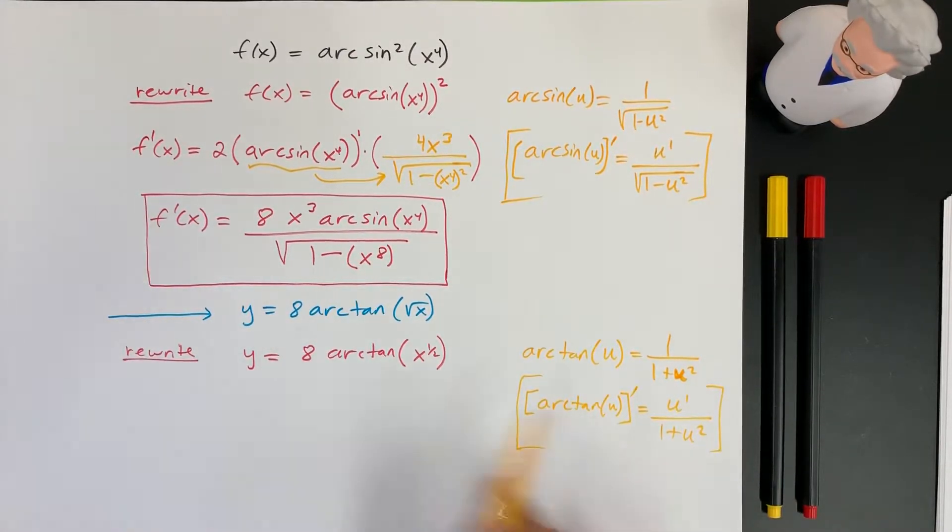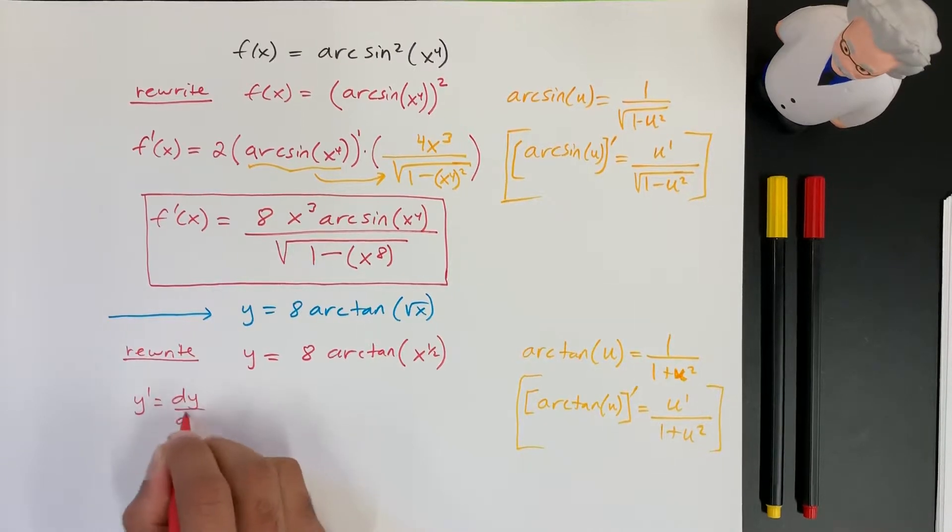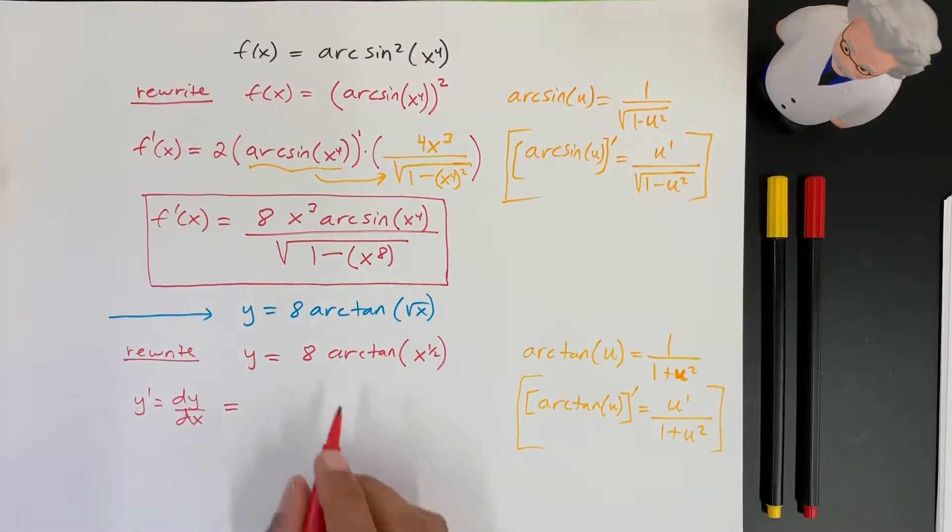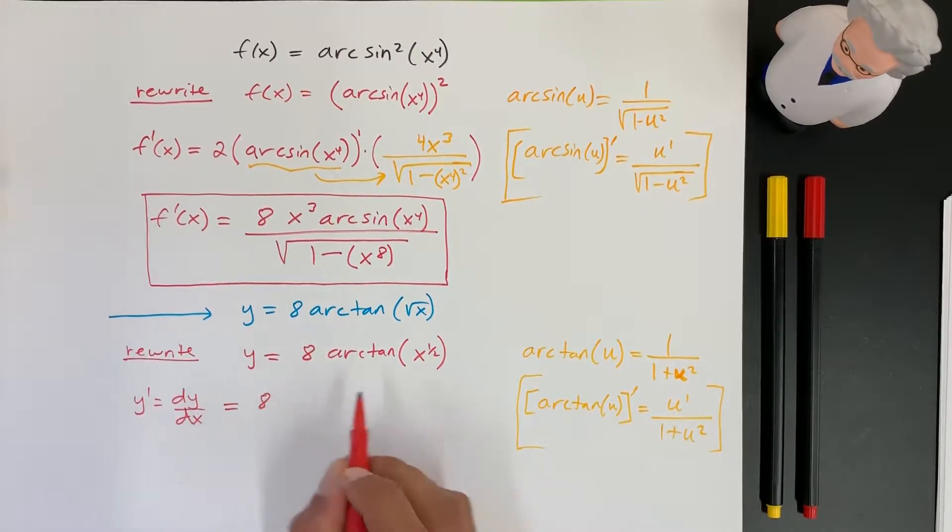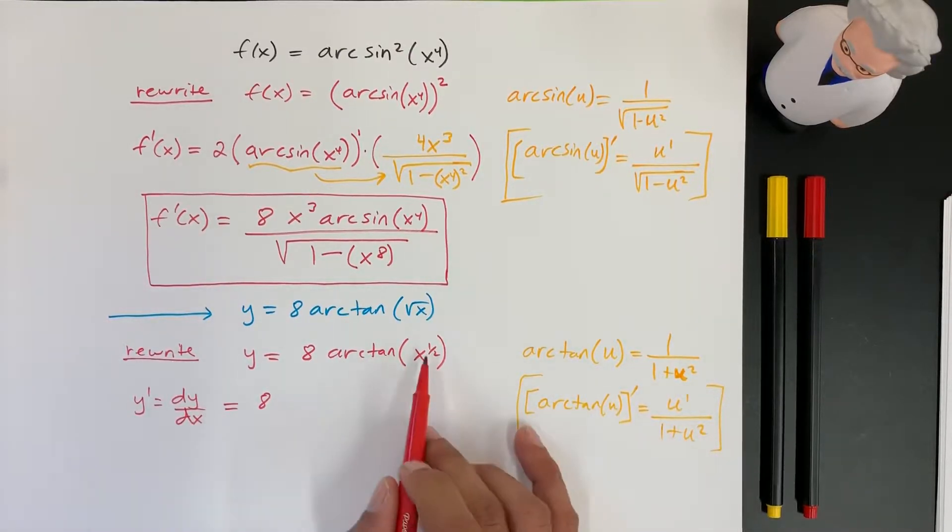So, now, applying that, let's take the derivative here. So, y prime, or we could write dy/dx. Okay, is going to be equal to 8 stays the same, and arctangent of x raised to the 1 half. So, if we want to take the derivative of arctangent, we have to take the derivative of whatever is inside here, which happens to be x to the 1 half.